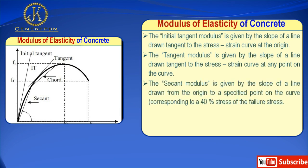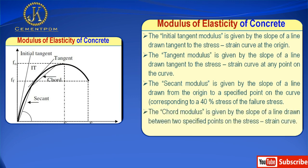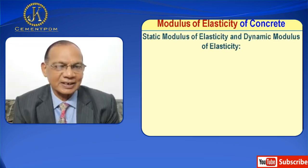The secant modulus is given by the slope of a line drawn from the origin to a specified point on the curve, corresponding to 40% of the failure stress. The chord modulus is given by the slope of a line drawn between two specified points on the stress-strain curve.